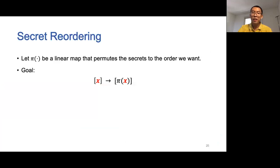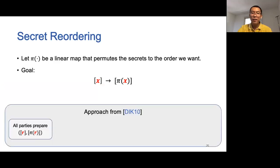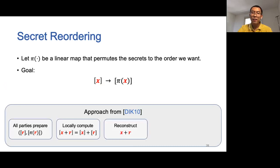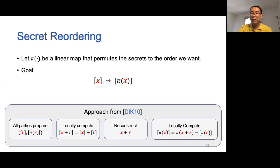Let π be a linear map that permutes the secrets to the order we want. Given an input sharing [x], our goal is to compute a sharing of π(x). In DIK10, this is achieved by first preparing a pair of random sharings [r] and [π(r)], where r is a random vector. Then, all parties locally compute the sharing of x+r using linear homomorphism. Next, all parties interactively reconstruct the secret x+r. Since all parties hold the vector x+r, they can locally permute this vector and compute π(x+r). The final step is to compute π(x) by subtracting the sharing [π(r)] from the public vector π(x+r), relying on the linearity of π.